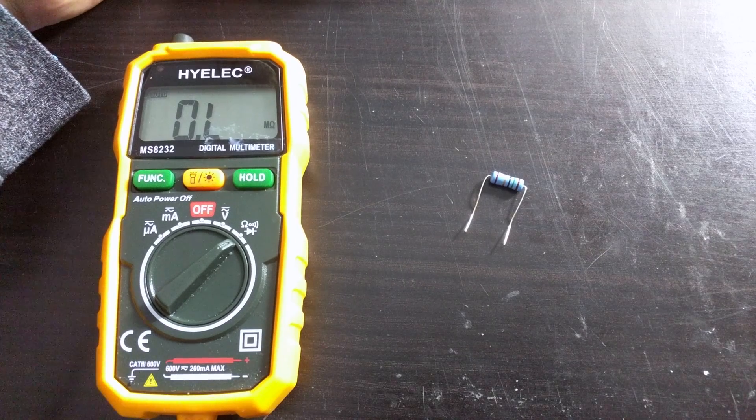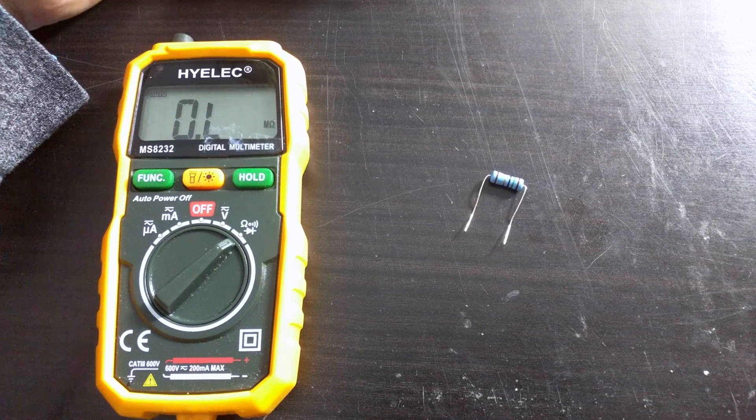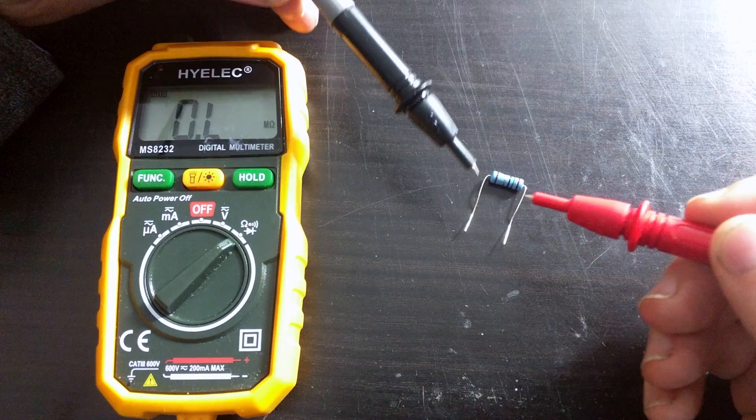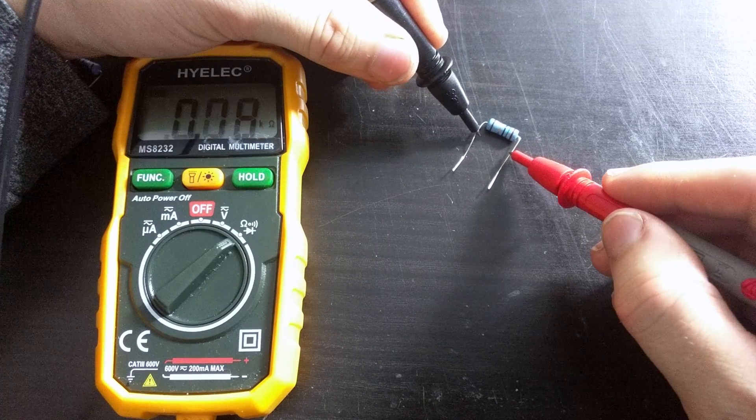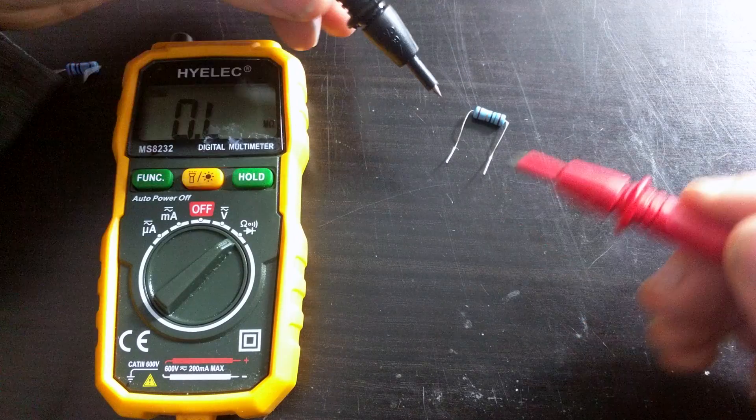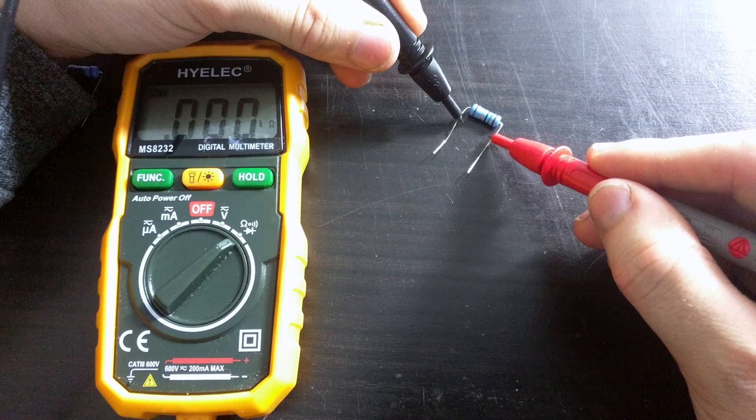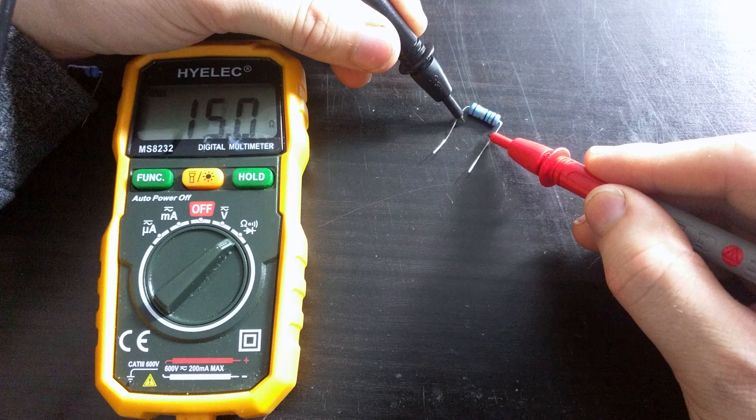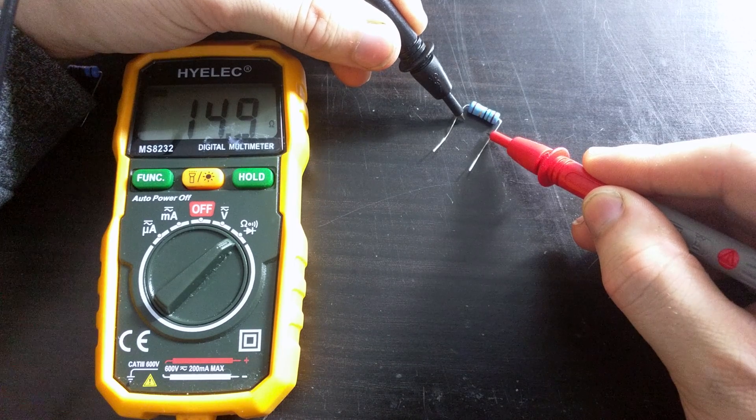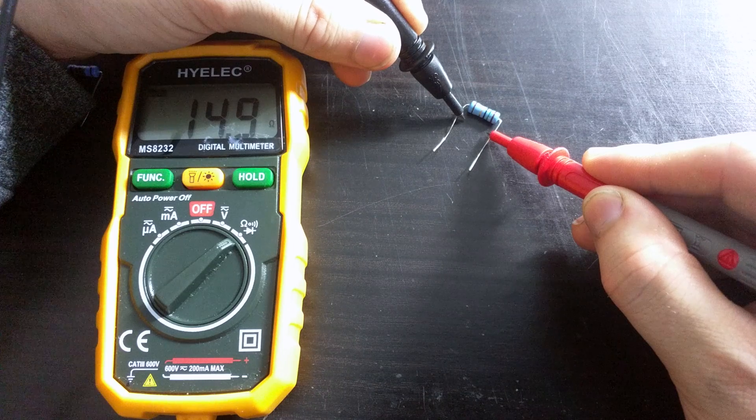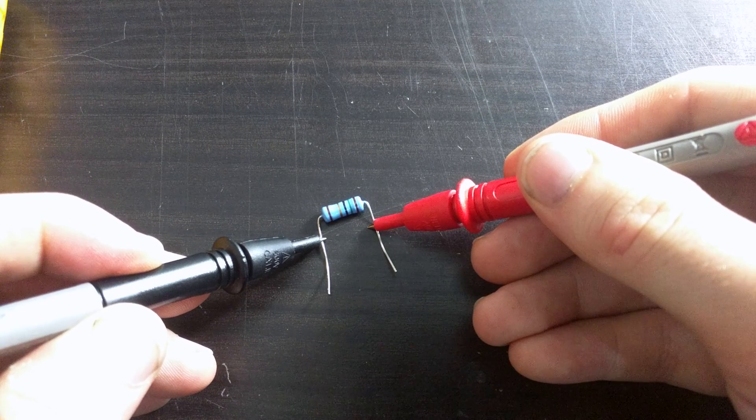When you want to measure resistance, for example the resistance of a wire or a certain component such as this resistor, you can simply take the two probes and make sure you get a good connection across the component by ensuring the metal on the end of the probes are touching the metal on either end of the component that you're testing. You can see here that my multimeter has recognized that I am measuring the resistance of this resistor and has given me a result of approximately 15 ohms. Here's a closer look of the probes contacting the ends of the resistor.